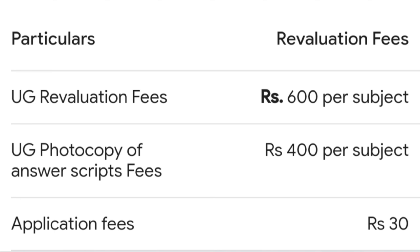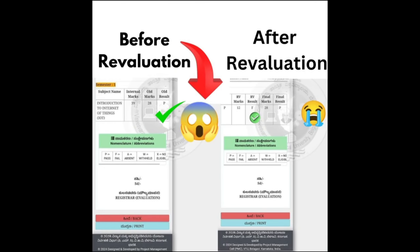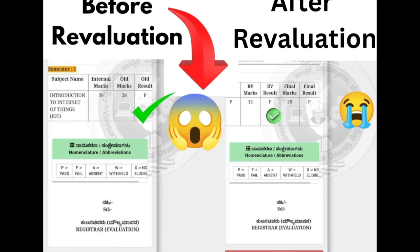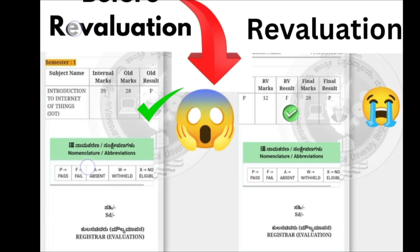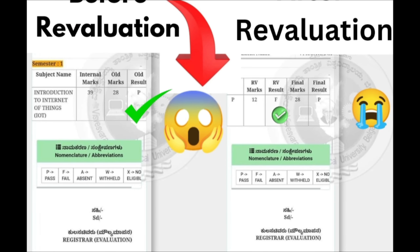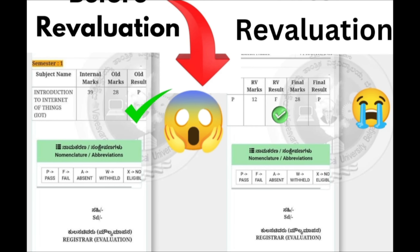The last thing is the VTU revaluation scam, for which I have already made a video explaining how VTU checks papers after evaluation. Here is one sample: a student got 28 marks externally with 39 internal marks, but after revaluation he got only 12 marks. So his score was reduced from 28 to 12.